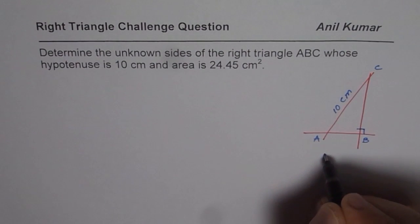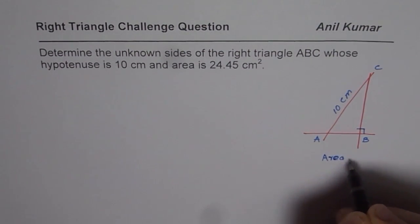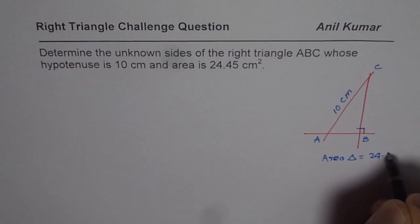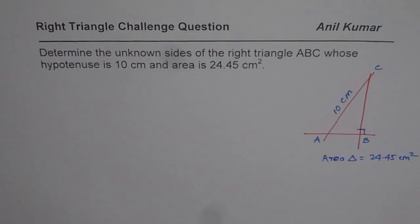Second, we are also given area of this. Let me write area here. Area of the triangle is equals to 24.45 cm². Okay, so that is all which is given to us. We need to find the sides.